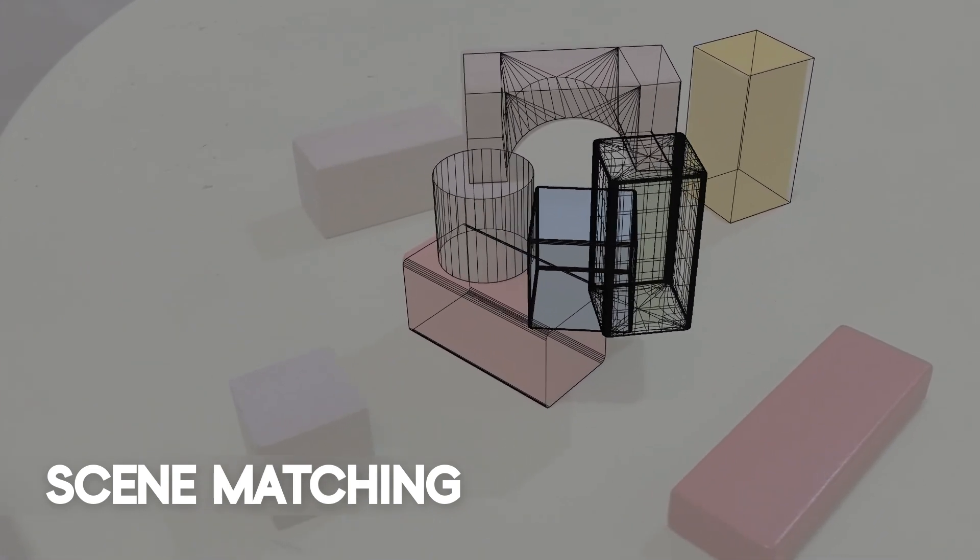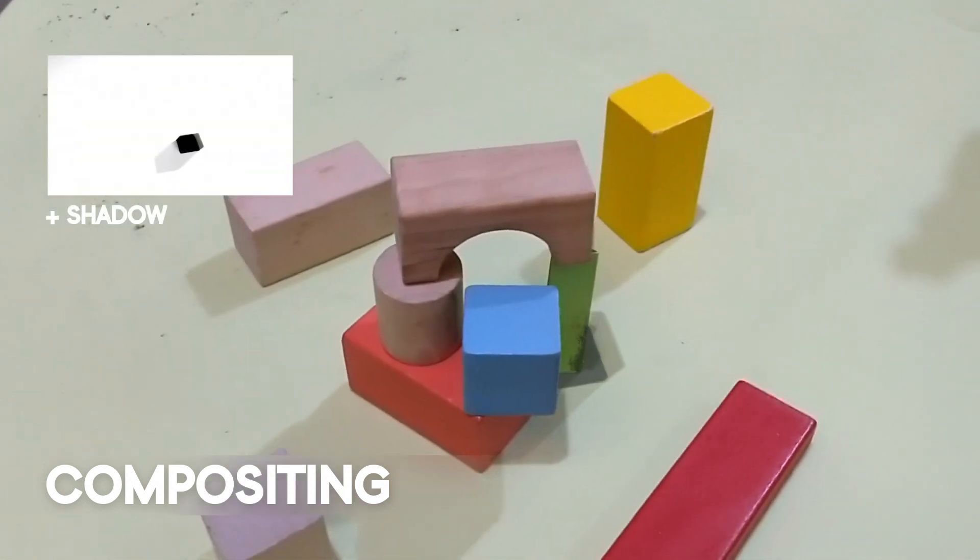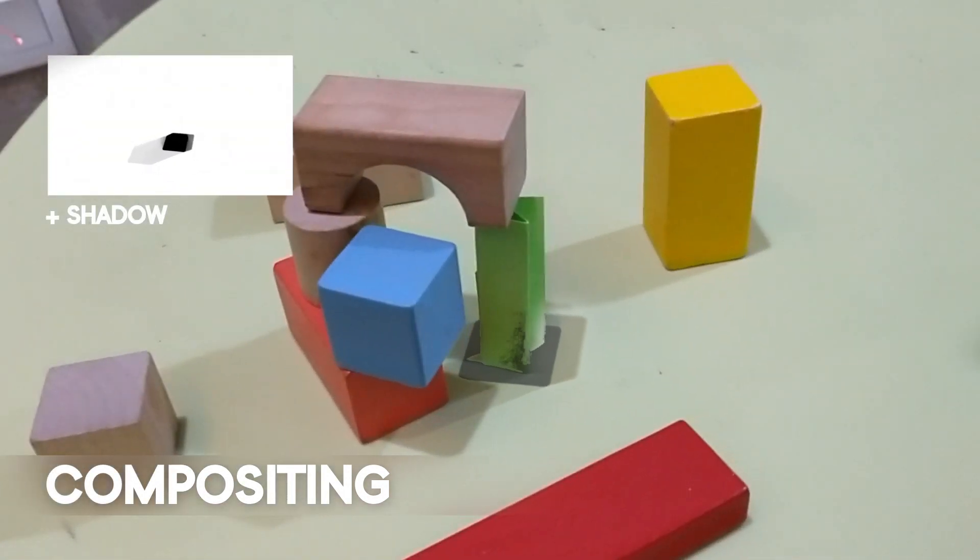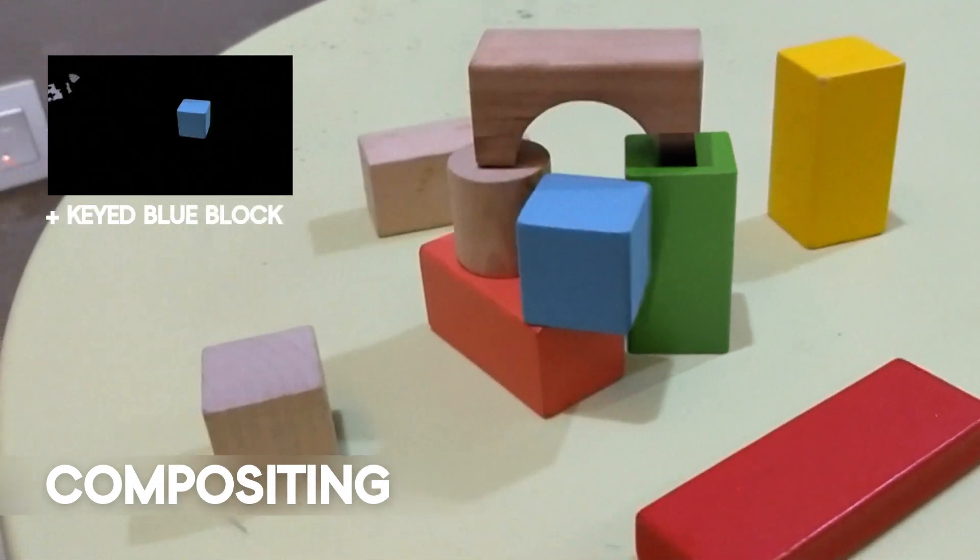Compositing was tricky as I had to lay down the shadow pass first, and on top of it, the CG block. The blue cube had to be keyed out and used to mask itself out to be layered on top of the CG block.